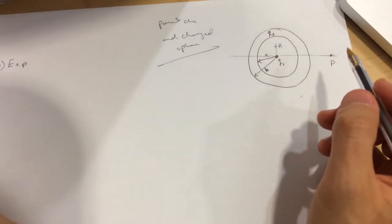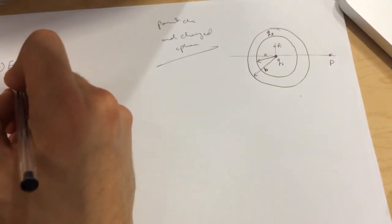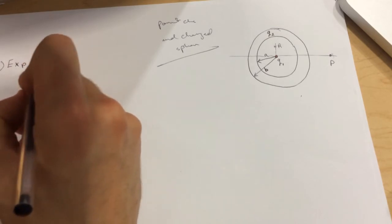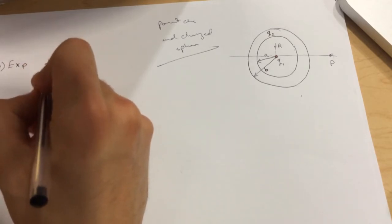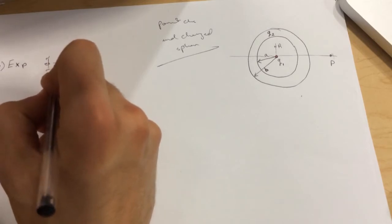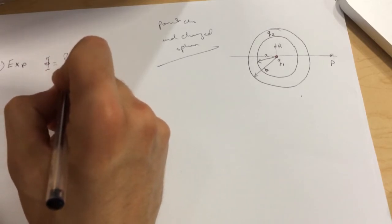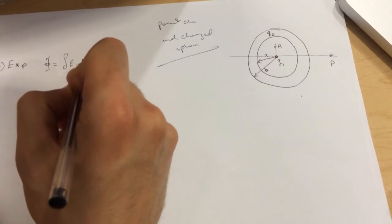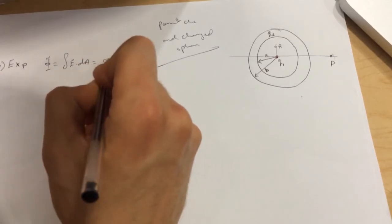We'll be using Gauss's law, so phi will be equal to the integral of E dot dA equal to Q enclosed divided by epsilon naught.